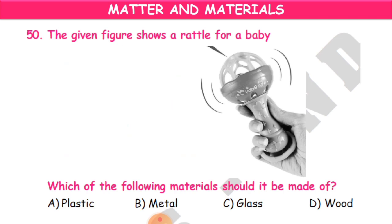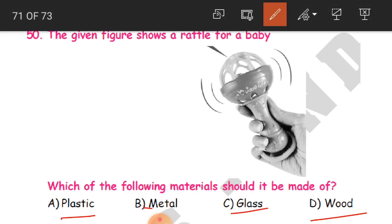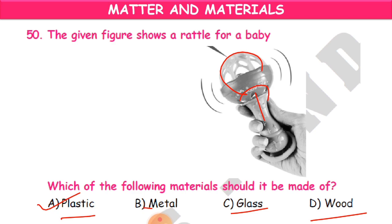Question 50, the last question: The given figure shows a rattle for a baby. Which of the following materials should it be made of — plastic, metal, glass, or wood? We give the rattle to entertain a baby. The answer is plastic. So that is the material for a baby rattle. We hope you have understood all the questions and answers of this lesson. We will continue with a new lesson in the coming session. Take care, goodbye, and stay well. Please visit our website.